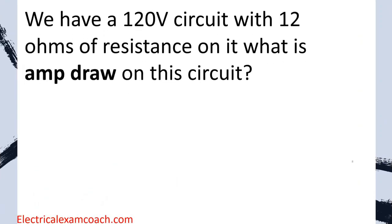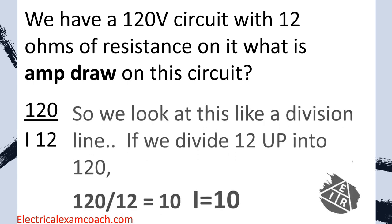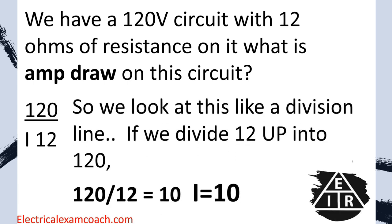In this case, we have a 120 volt circuit with 12 ohms of resistance. What is the amp draw on the circuit? We just plug in what we know — 120 volts and 12 ohms of resistance — and look at it like a division line. We take 120 divided by 12 equals 10. That lets us know that there should be 10 amps of current on this circuit.